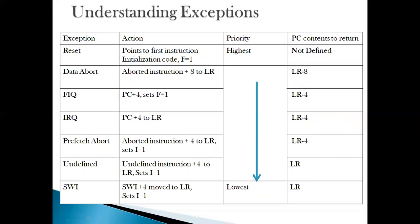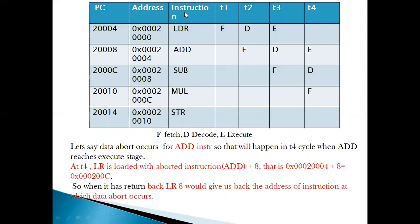When data abort occurs, whatever is the aborted instruction address plus 8 is stored in the LR, and the program counter is loaded with the vector address of data abort. For the return, we subtract 8 from the LR contents of abort mode to come back to the same instruction at which the data abort exception occurred. To understand why 8 is required, let us look at the pipeline. This is the address of each instruction along with the pipeline stages and timing cycles T1, T2, T3, T4.